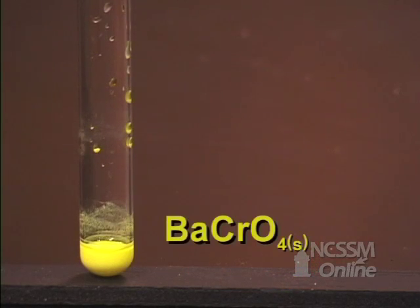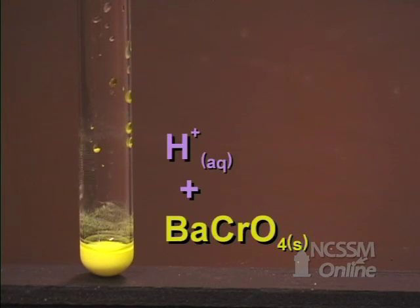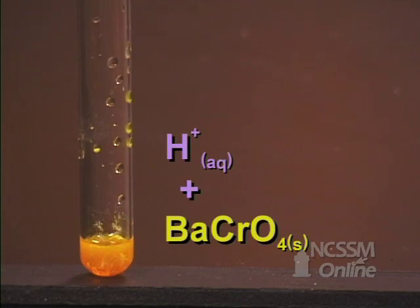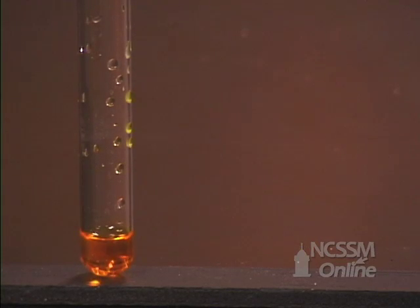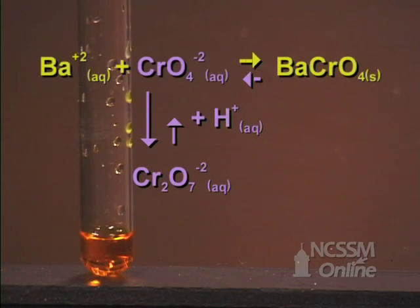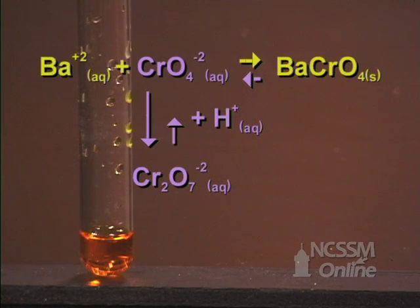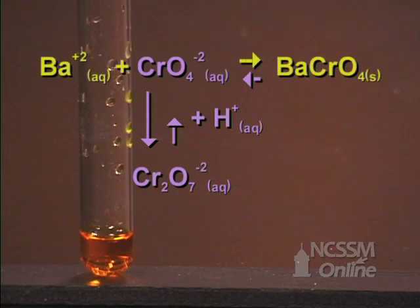If we take some of the solid barium chromate and add 6 molar nitric acid, we see that the solid goes back into solution and the solution turns orange. Adding the nitric acid provides a source of hydrogen ions. The hydrogen ions combine with the chromate ions and shift the equilibrium in the reverse direction to form dichromate. The solution turns orange. As we add more and more hydrogen ions, the equilibrium is forced further in the reverse direction and the solid completely dissolves.